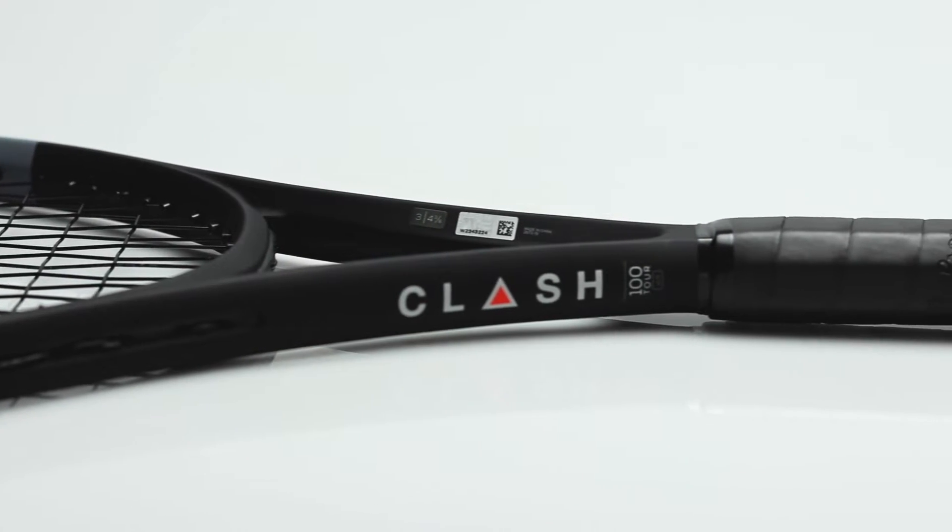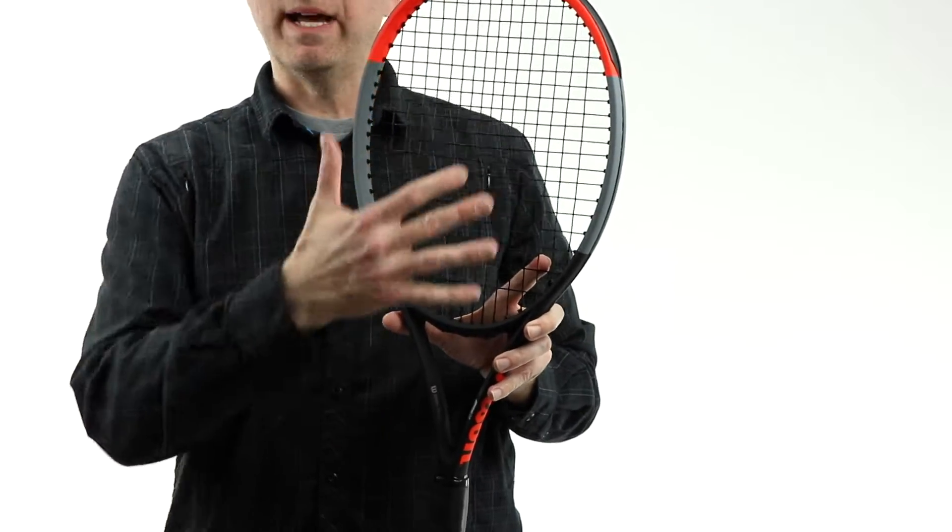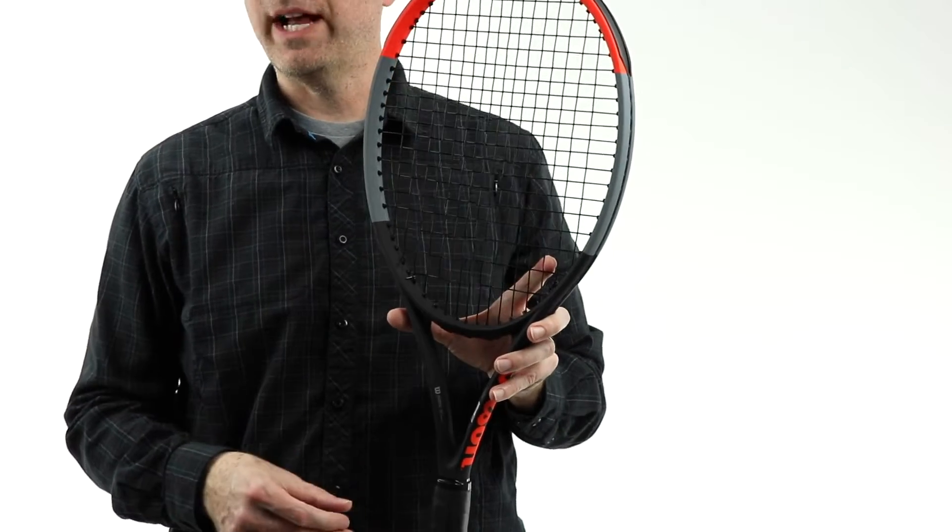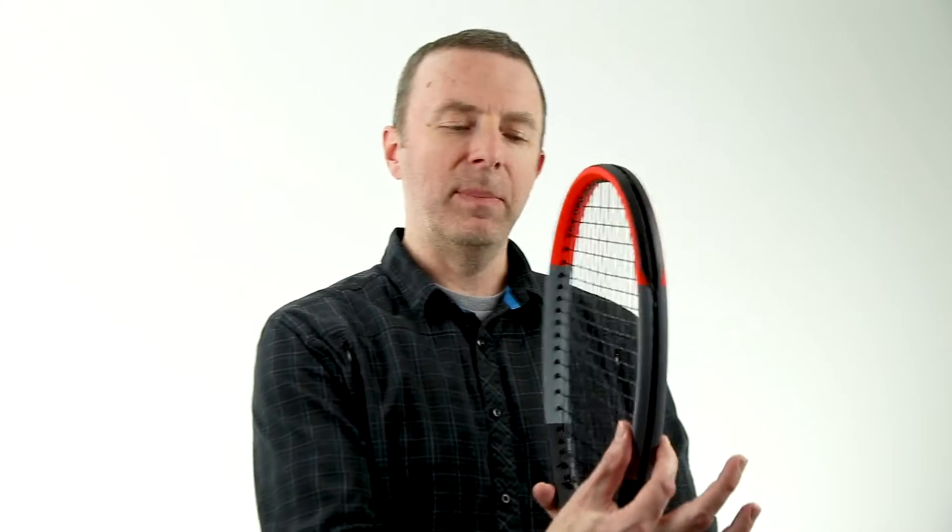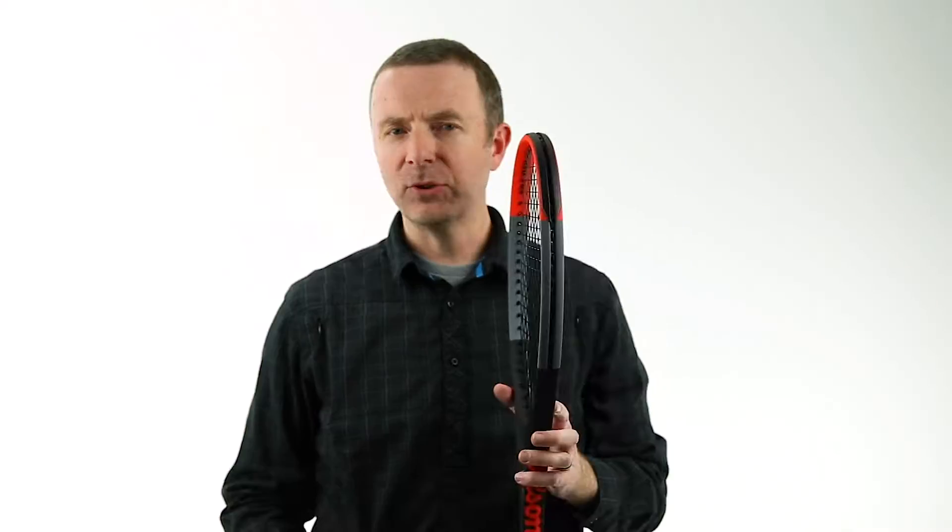Again, this is the Clash Tour 100. So this is an 11 and a half ounce strong spec, a hundred square inch head. So about a half an ounce heavier than the standard Clash 100. Same beam width, 24 and a half millimeters. So a little on the wider end of the spectrum as far as tweener rackets go.